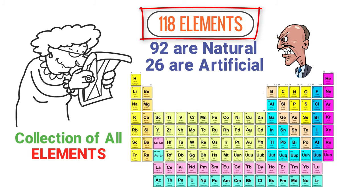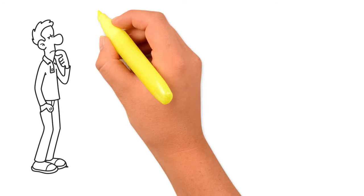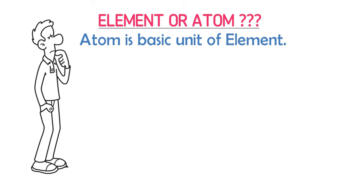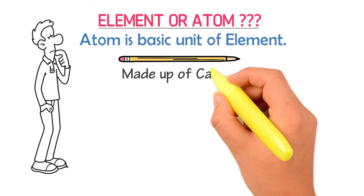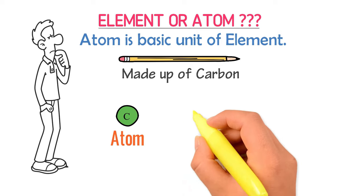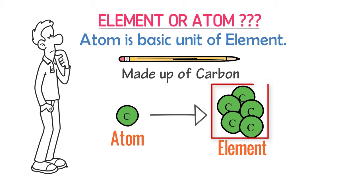Let me also quickly give you a bonus tip. Are you confused about an element and an atom? It is not difficult. An atom is the basic or fundamental unit of an element. For example, consider a pencil — it is made from carbon. Carbon is an element made from millions of small carbon atoms. When these small atoms combine together, we get an element like the material of this pencil.